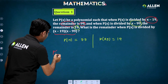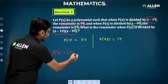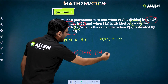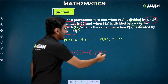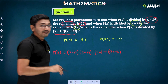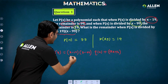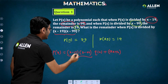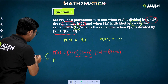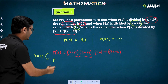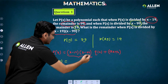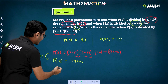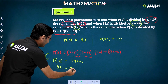Let me write p(x) = (x minus 19)(x minus 99)·q(x) + (ax + b), since we are dividing by a quadratic so the remainder is at most linear. From this equation we already know p(19) = 99. Putting x = 19, this quadratic factor goes to 0, giving us 19a + b = 99.